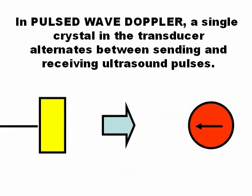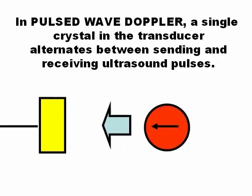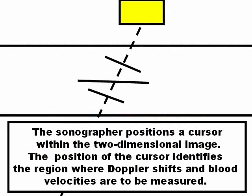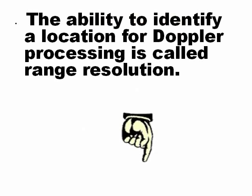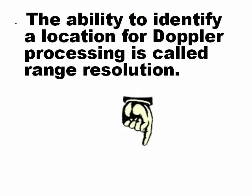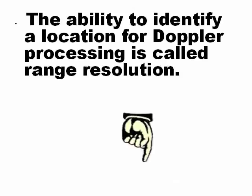In Pulsed Doppler, there is only one crystal. That one crystal produces ultrasound in transmission, and in reception the same crystal takes the echo back. The sonographer in Pulsed Doppler places the gate exactly in the artery that they want to measure. And that means that we know where we are measuring. This is called Range Resolution.